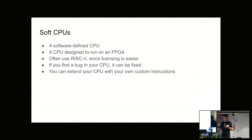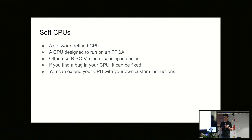A soft CPU is a CPU that runs on something like an FPGA. It's often implemented as RISC-V since the licensing is a lot easier — you don't have to pay licensing fees to ARM or similar. If you find a bug in your CPU, you can fix it, and you can extend your CPU with custom instructions, which we did with our project.